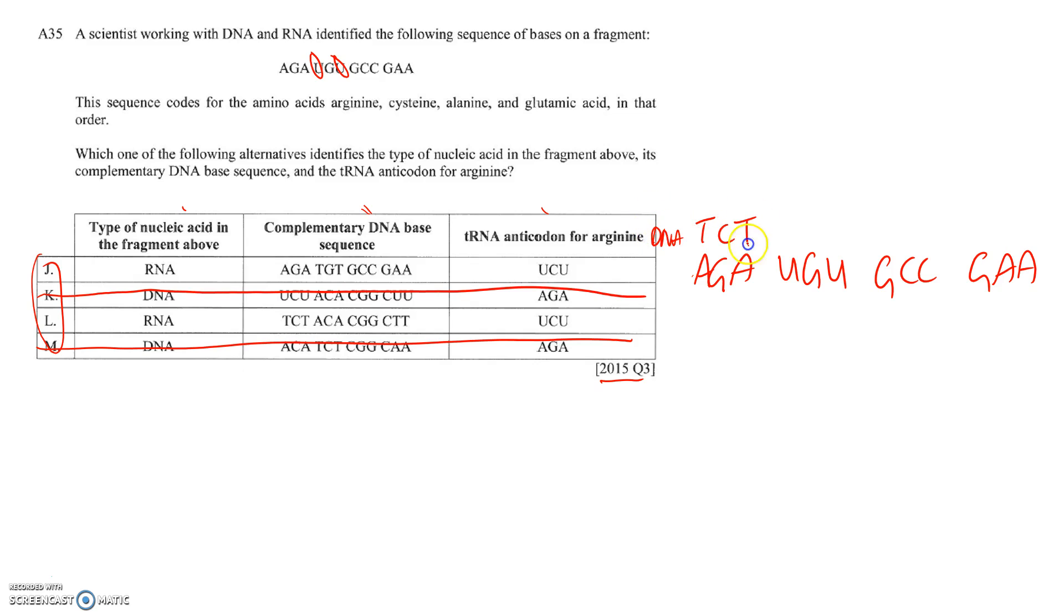So T, C, T, A, C, A, C, G, G, and C, T, T. That matches this one but not this one, so I can actually cross that one off.